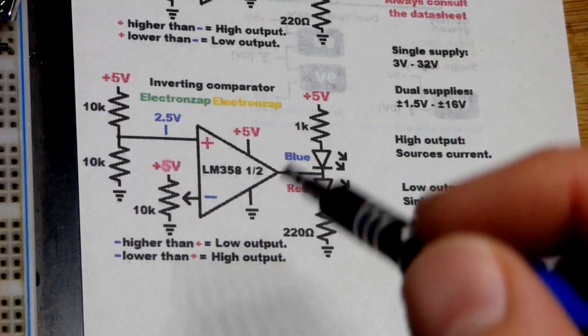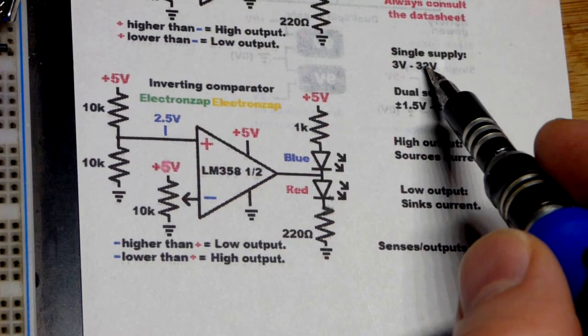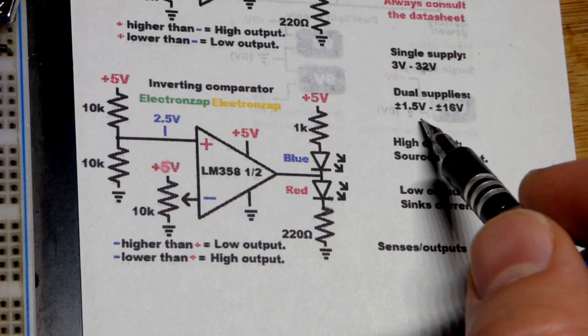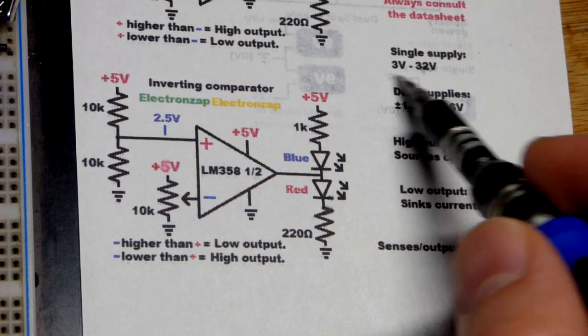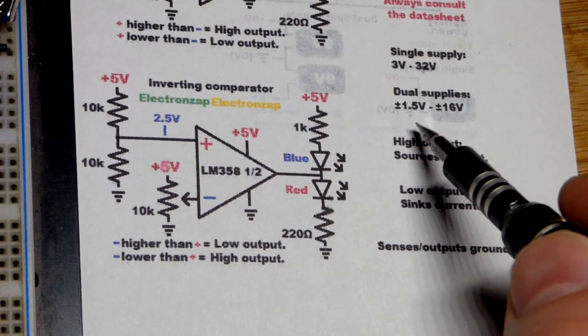That lets us know that the op amp is connected to the negative supply as well as it can do. Now we'll zoom in on the schematic that I drew. Some of this stuff is from the data sheet. I always check the data sheet. That's the maximum, or the working range of the voltage that we should do.